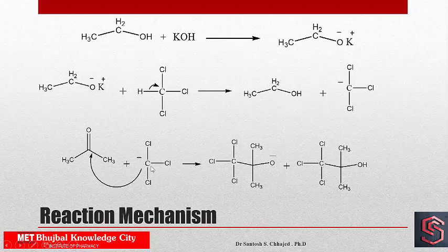This carbanion, formed as an intermediate, has a carbon possessing a negative charge, meaning it has an excess of electrons. It will share its electrons with the carbonyl carbon. As we know, carbonyl carbon is electron-deficient, and that is why nucleophilic addition takes place — the electron pair on the nucleophile is shared with the carbonyl carbon to form a new bond.